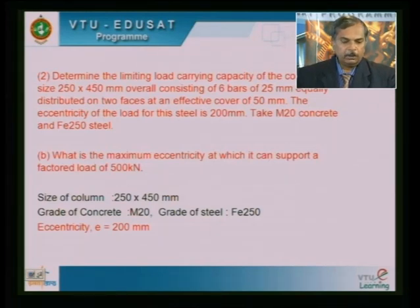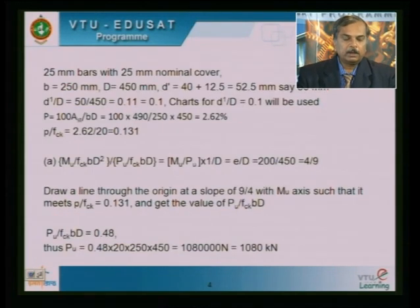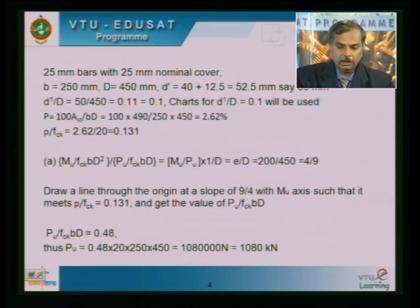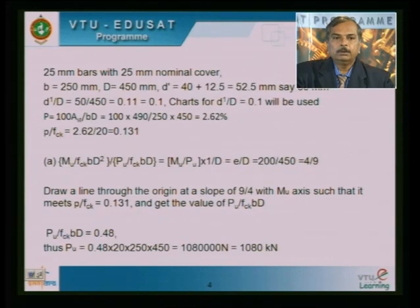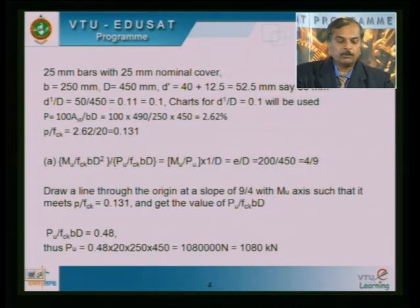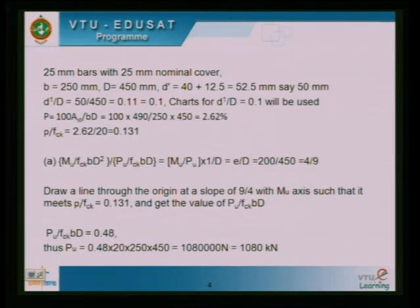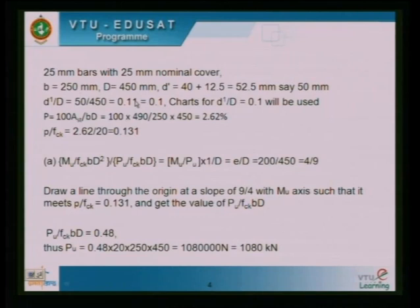We calculate the non-dimensional parameters required. First, identify the effective cover to depth ratio with respect to the major axis. Using a 25 mm dia bar with 40 mm nominal cover, D' works out to 52.5 mm, rounded to 50 mm. So D'/D = 50/450 = 0.11, which is very close to 0.1, so the chart corresponding to D'/D = 0.1 is used.